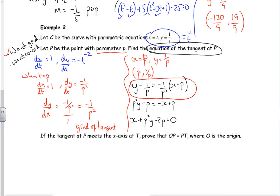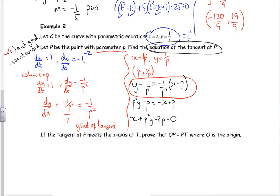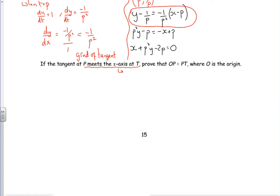Right, so then it says if the tangent at P, which is this one, meets the x-axis at T, prove that the distance from O to P is the same as P to T, where O is the origin. Right, okay, let's have a think about it then. If P meets the x-axis at T, then T must be when y is zero. That's what that's telling us there, so y is zero there. So we'll write that down, so T.